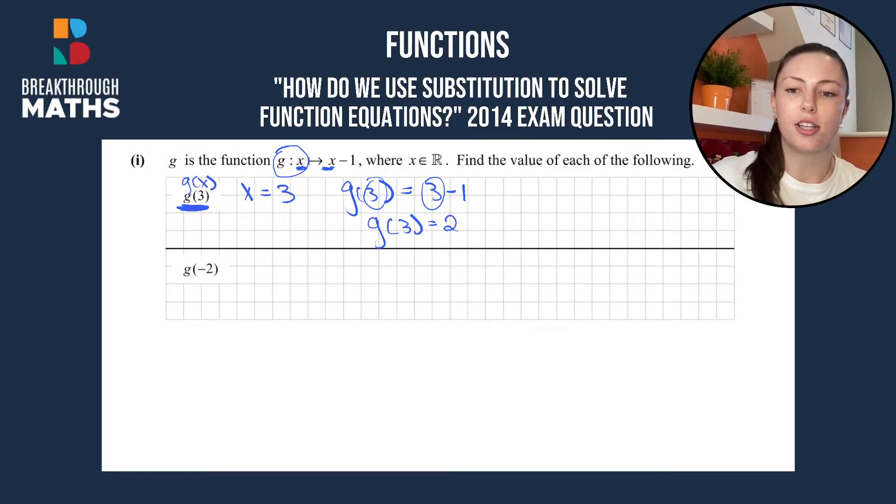Okay, on to finding g(-2). Same thing again, instead of g(x), we have g(-2). So x is going to be equal to -2.